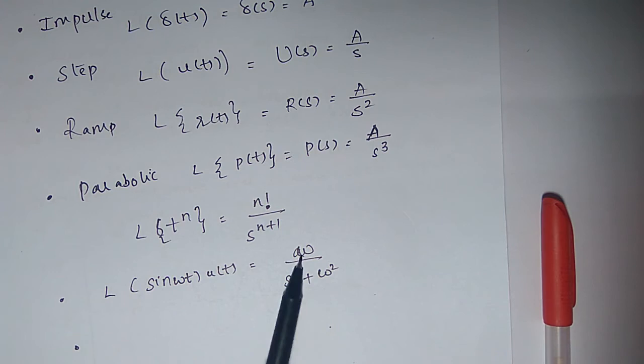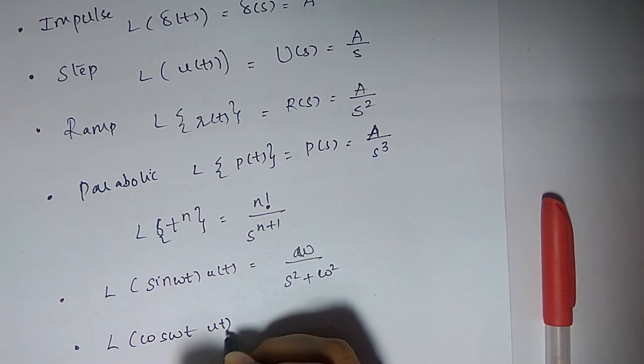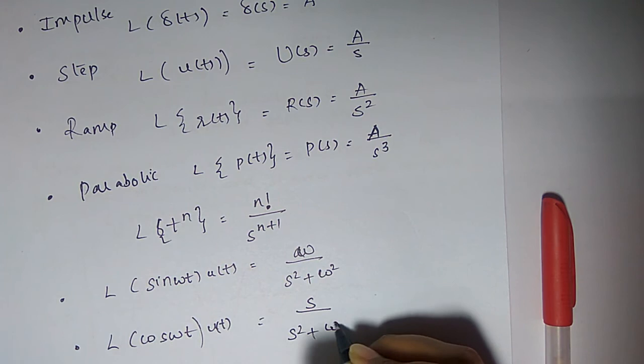And Laplace of cosine omega t u of t is s by s square plus omega square. These are the few Laplace transforms generally we use in the control systems.